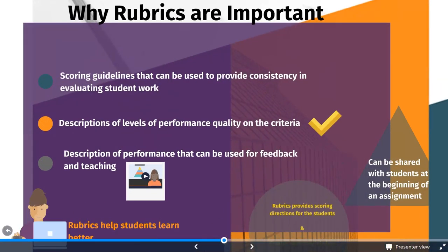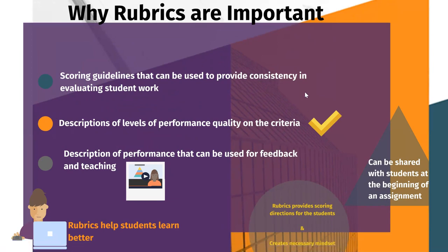Let us discuss why rubrics are important. What is the meaning of rubric? Rubrics are scoring guidelines for students that can be used to provide consistency in evaluating student work. It will avoid personal biases. Any teacher can evaluate the set questions during assessment. Bias-free assessment is possible only with rubrics. Rubrics are a description of levels of performance quality on criteria.